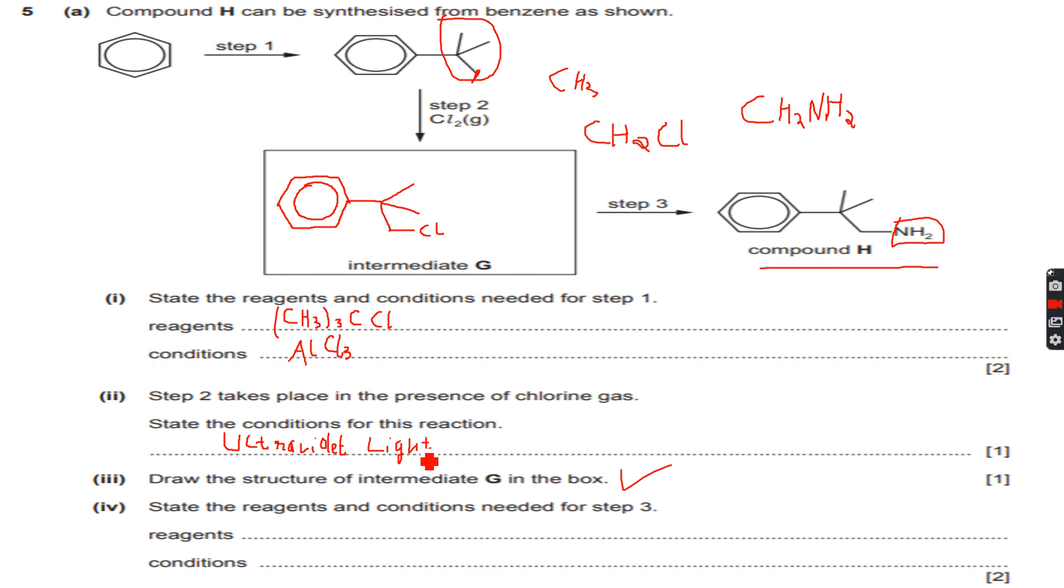State the reagents and conditions needed for step 3. If you've watched my playlist on organic nitrogen compounds, we know that the reagent is NH₃ ammonia and the condition is heat in a sealed container. So we are adding NH₃ and we are heating NH₃ with intermediate G in a sealed container and then we will get compound H. So we are done with this as well.